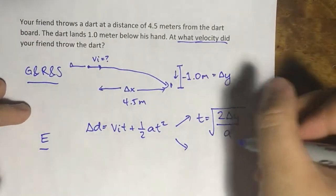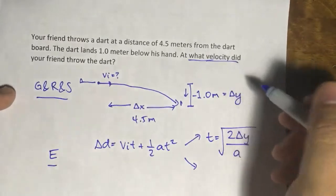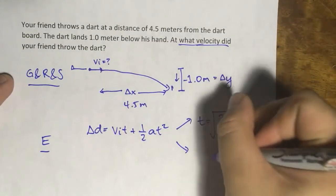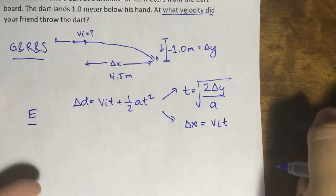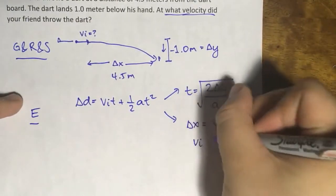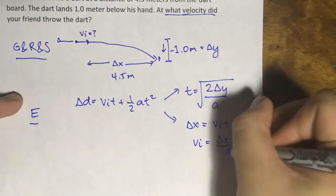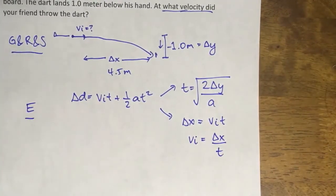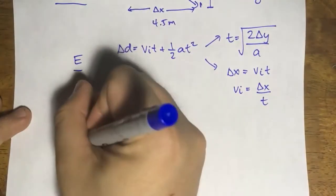And for what we're looking for, which is vi, we'll simply get that from delta x is equal to vit. And rearranging it will give us vi is equal to delta x all over t. So these two equations would then lead us to the solution to the problem. Let's solve.